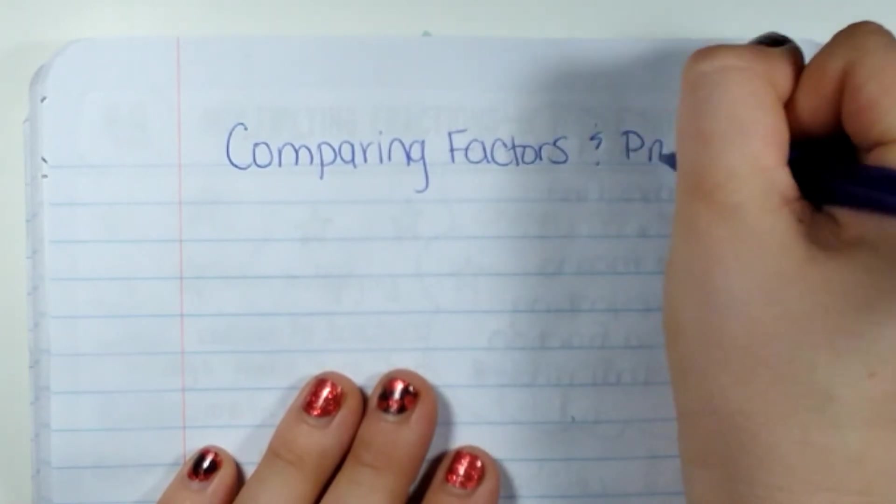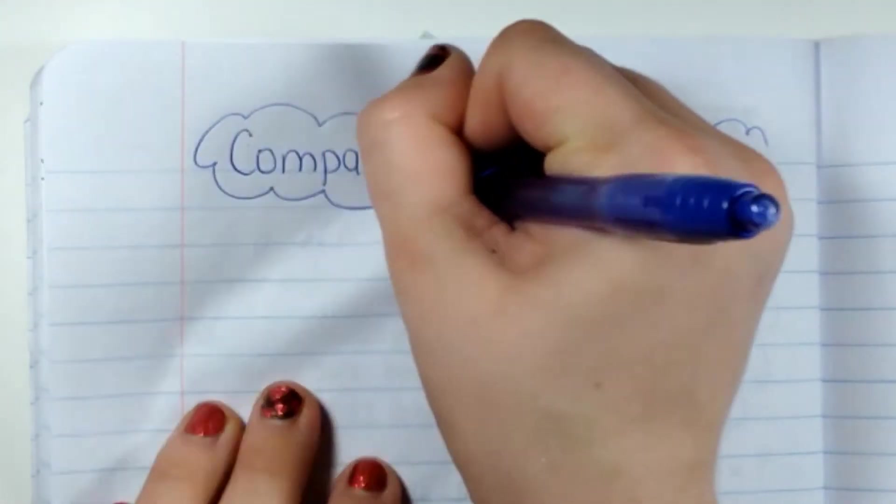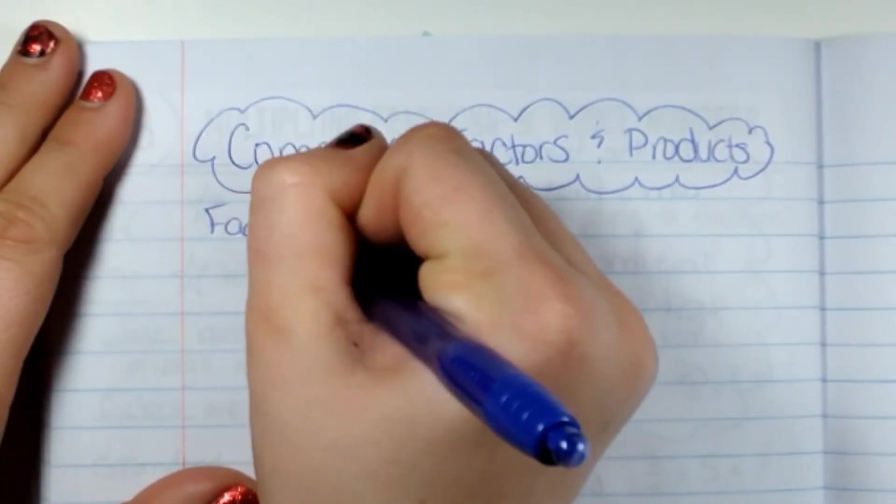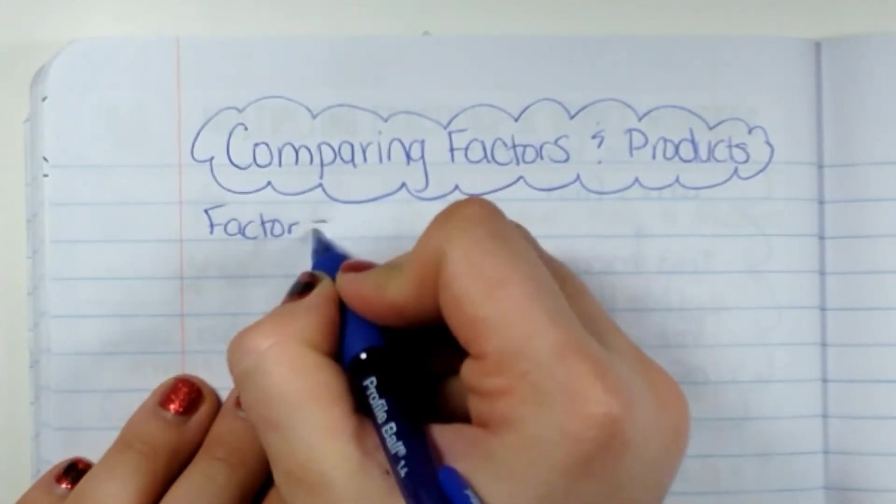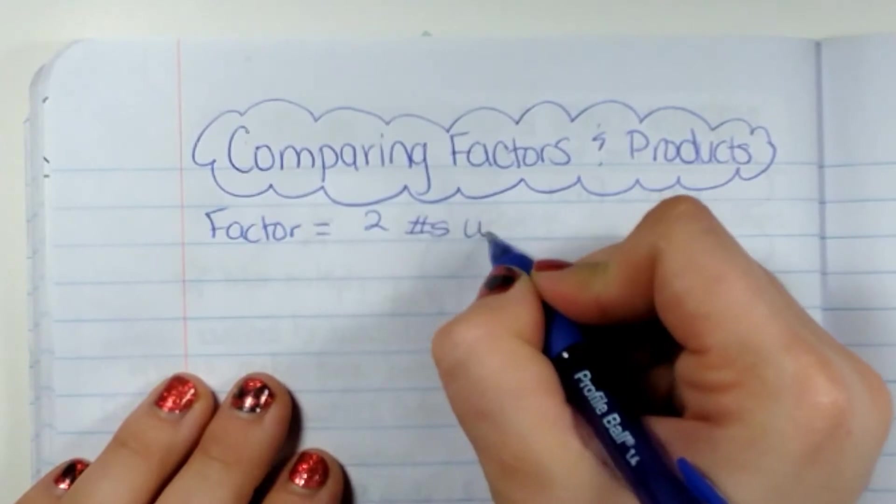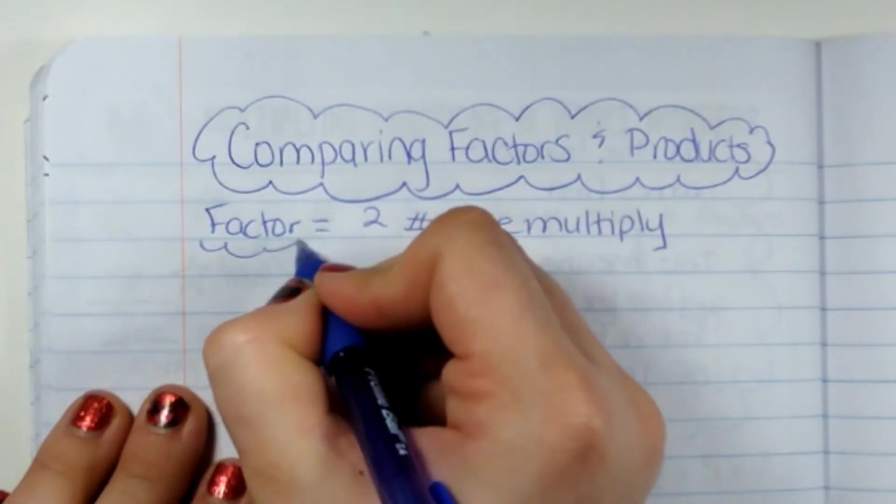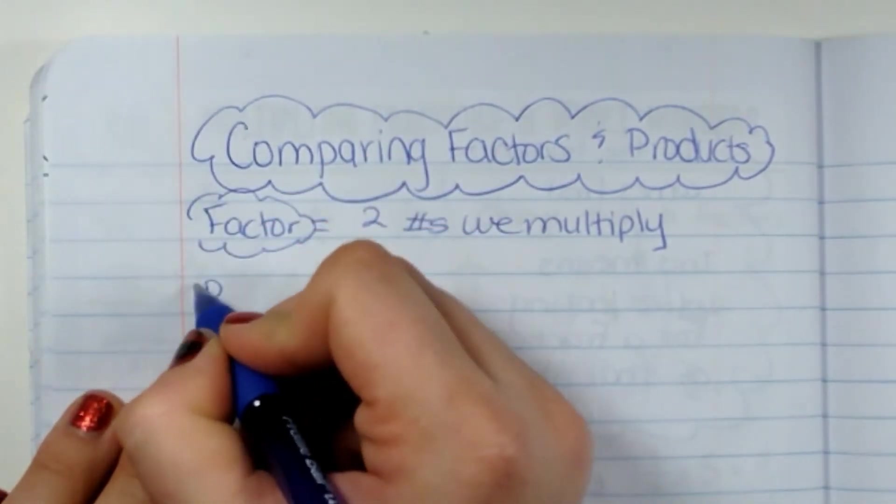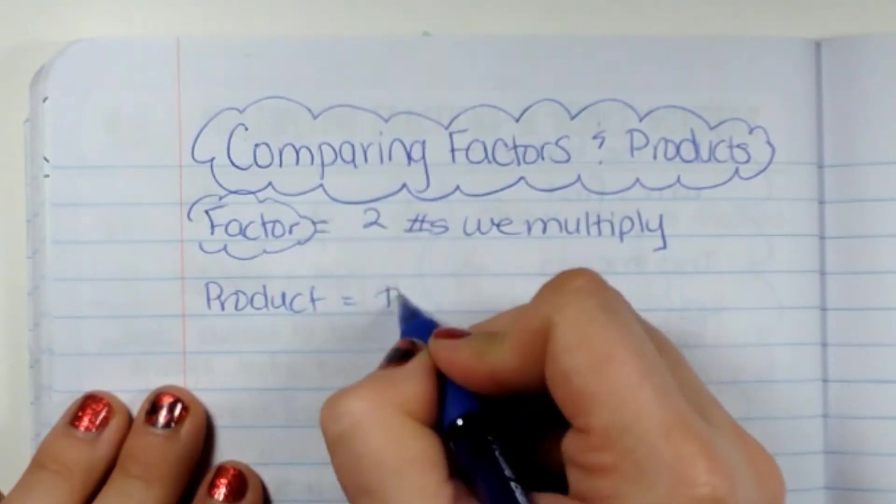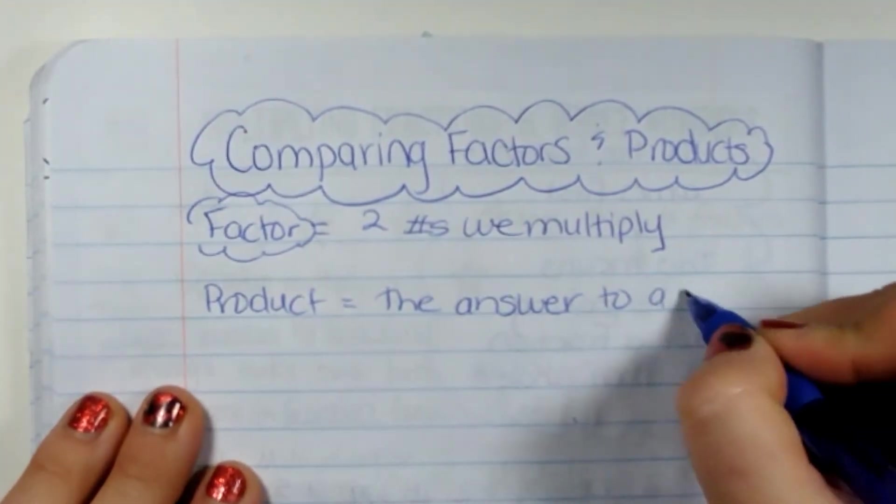So comparing factors and products. Now, if we remember, and I'm going to do a quick review, a factor are two numbers that we multiply. Two numbers we multiply. And the product is the answer to a multiplication problem.